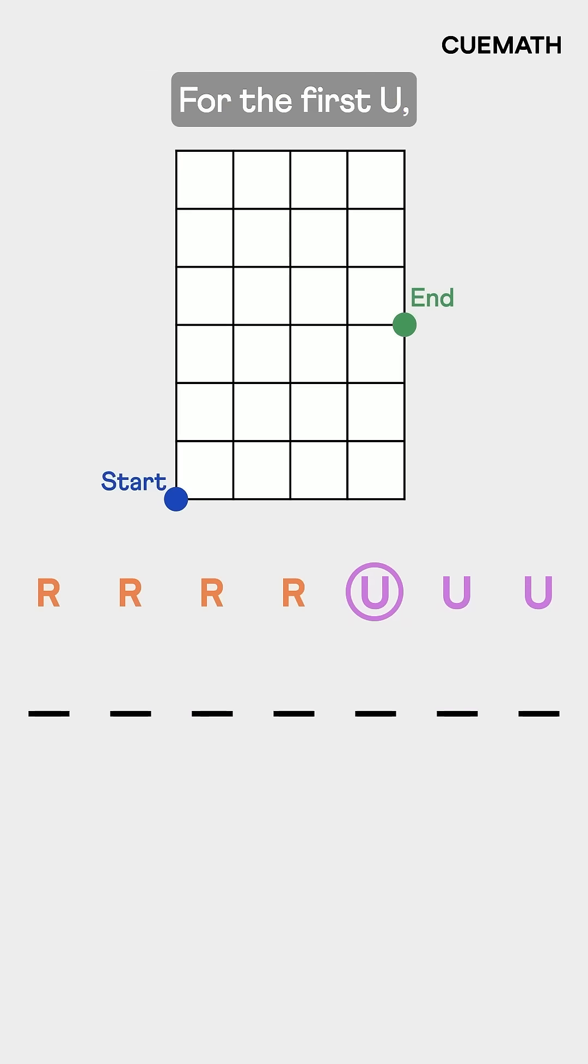For the first U, we have seven options, six for the second, and five for the last one. That's seven times six times five.